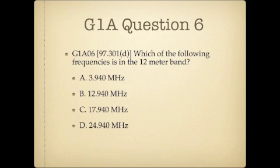Question 6. Which of the following frequencies is in the 12 meter band? A. 3.94 megahertz. B. 12.94 megahertz. C. 17.94 megahertz. Or D. 24.94 megahertz.